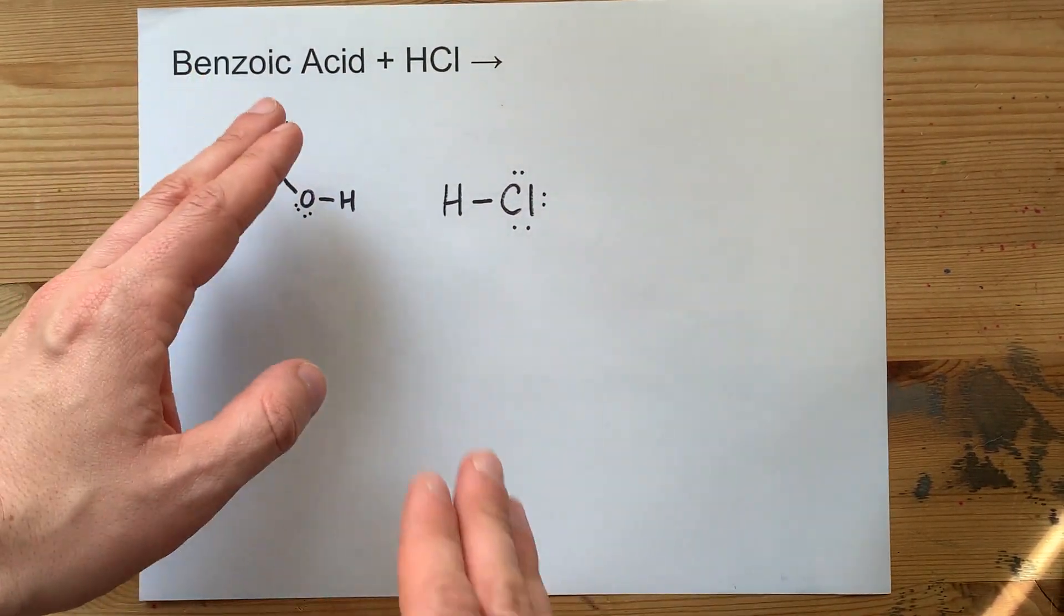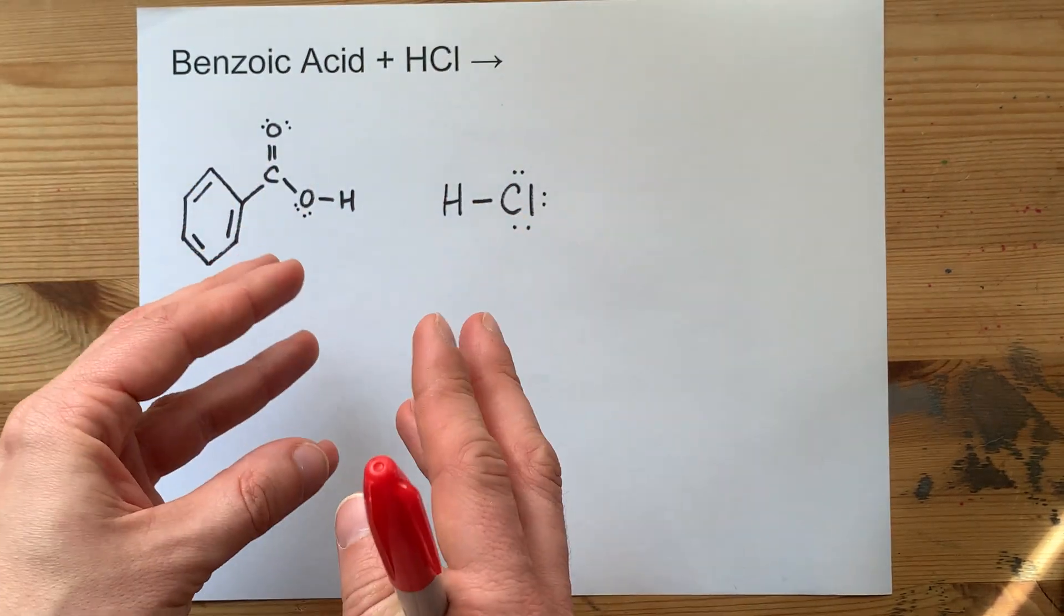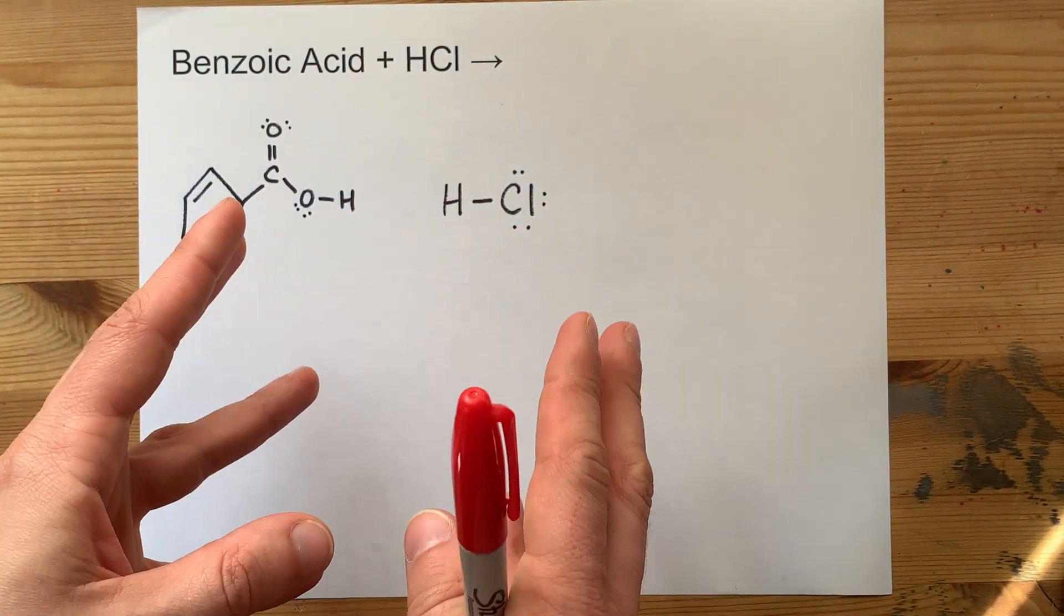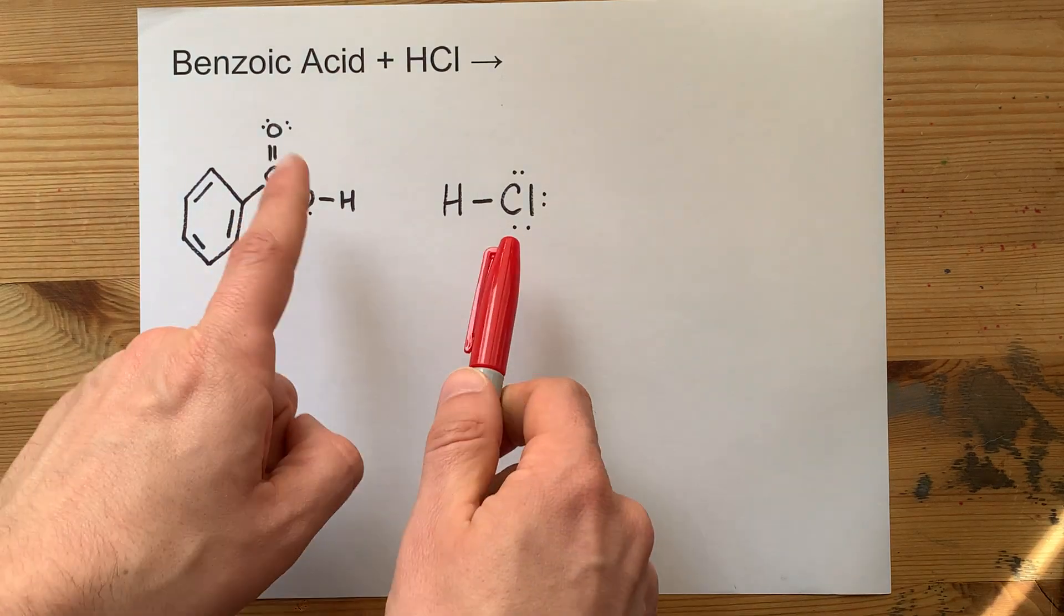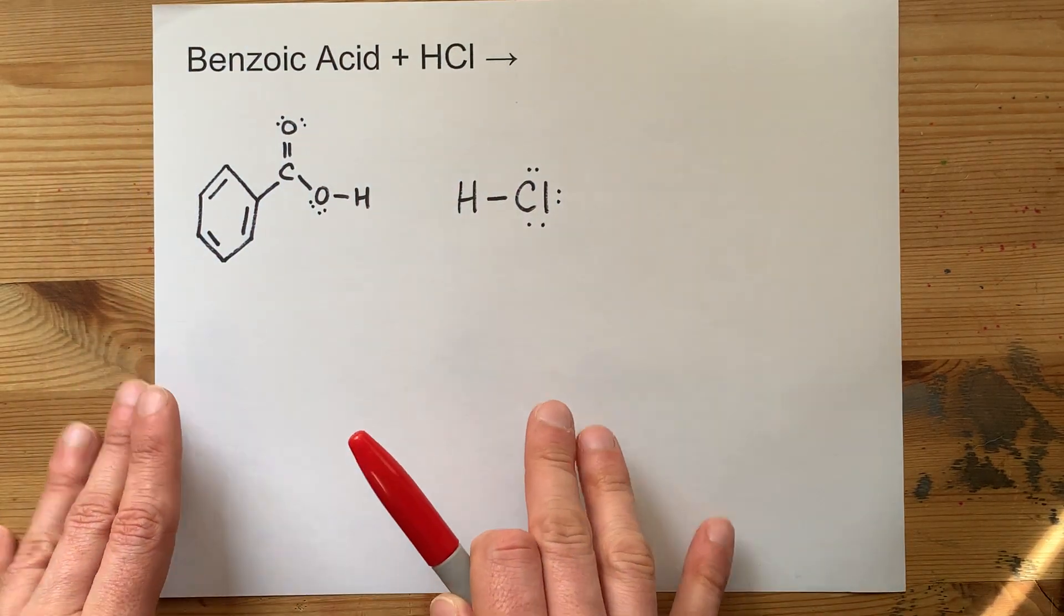Generally, you'll have acids reacting with bases. If they're strong enough acids, sometimes they'll react with neutral compounds. But getting two acids to react is very unlikely.